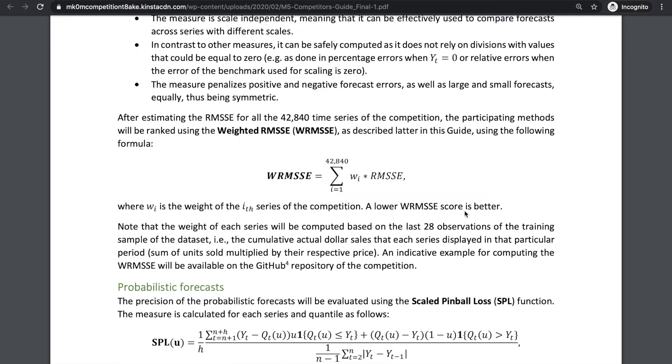The RMSSE is used to score individual series, and our submission will be ranked using a weighted aggregation of these individual scores. This score is called the weighted RMSSE, shortened as WRMSSE, which just adds up the product of RMSSE for each series with its respective weight. A lower WRMSSE gives us a higher ranking.